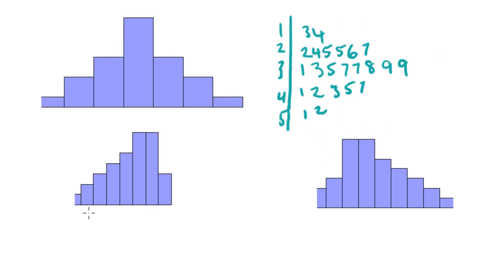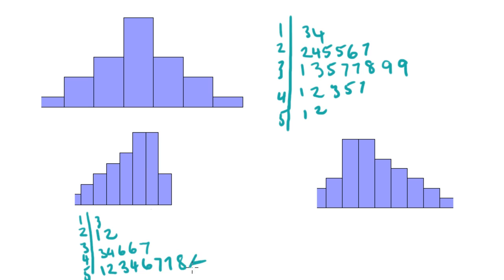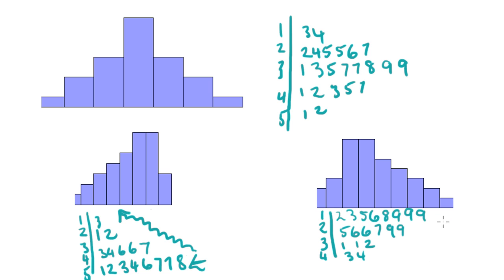For a negatively skewed stem and leaf plot, your cluster of major numbers — where the most data points are — is going to be up near the top, and then it tapers off going down towards lower numbers. For a positively skewed one, the main hump of the hill is down towards the lower numbers, and it tapers away going towards higher numbers. So this one is positively skewed.